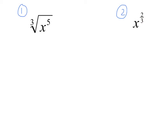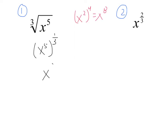Let's think about what this means. The cube root of x to the fifth is the same thing as saying x to the fifth, that whole thing, raised to the one-third power. We can apply the property — x squared to the fourth power is x to the eighth — so we can multiply exponents. Here, x to the fifth raised to the one-third is the same thing as x to the five-thirds, because we just multiply five times one-third, which is five-thirds.